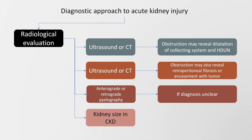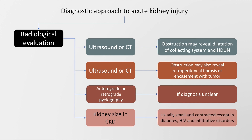A word of caution about kidney size in chronic kidney disease: in general, the kidney is small and contracted in CKD, except in cases with diabetes, HIV-associated nephropathy, and infiltrative disorders such as amyloidosis. Multiple myeloma may also present with a normal-sized kidney despite the patient having chronic kidney disease.